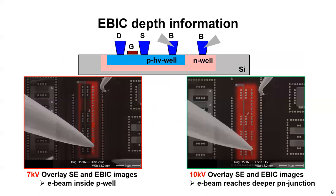After connecting a PN junction, it's important to understand the structure and the method itself. Here you can see two EBIC images of a high voltage NMOS transistor with an additional P-well and N-well structure underneath. Both images use the same connections — P-well and N-well — and SEM parameters. Only the accelerating voltage is different: 7 kV at the left image and 10 kV at the right. The 7 kV image shows only the contact row of the P-well and a small signal at the edge of the P-well. At 10 kV, you can see more or less the homogeneous signal of the entire P-area.